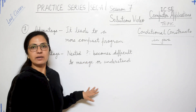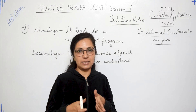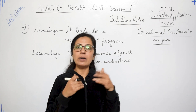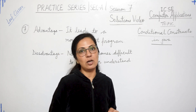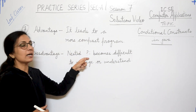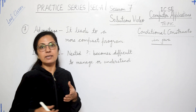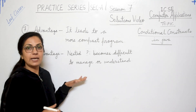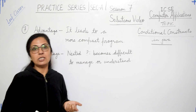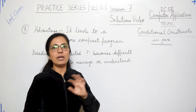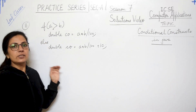Question 7: give one advantage and one disadvantage of using the ternary operator in place of an if statement. The advantage is it leads to a more compact program — the length of the program becomes less because in place of many lines you write just one statement. You can refer to the operators and expressions chapter for detailed study. The disadvantage is that nested conditional operators become difficult to manage or understand when multiple conditional operators appear in the same statement. The symbol is ?: and the other name is ternary operator.